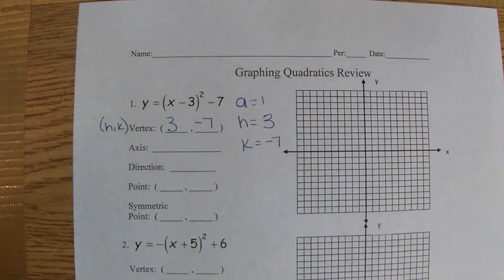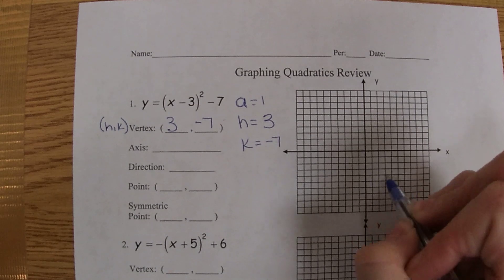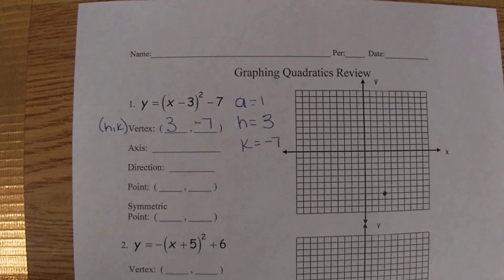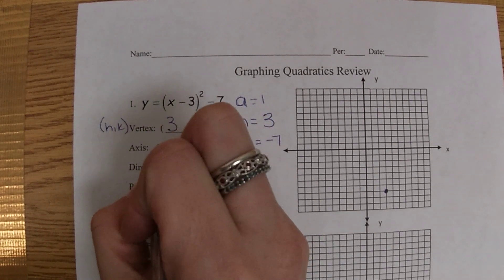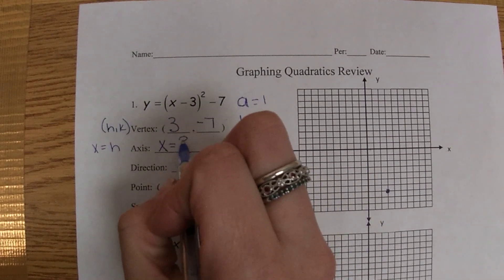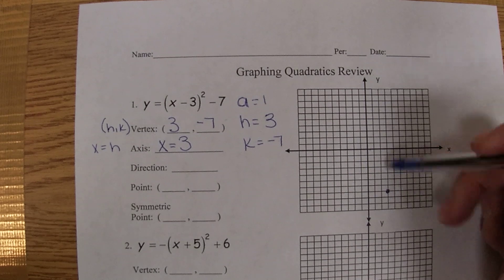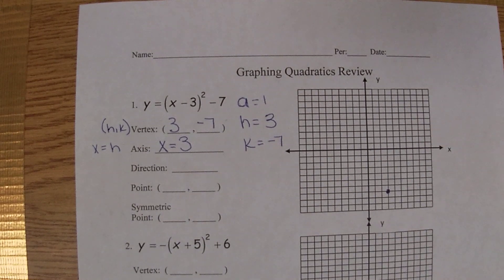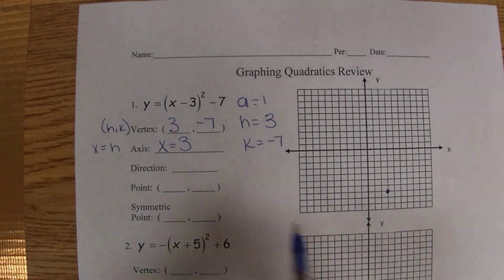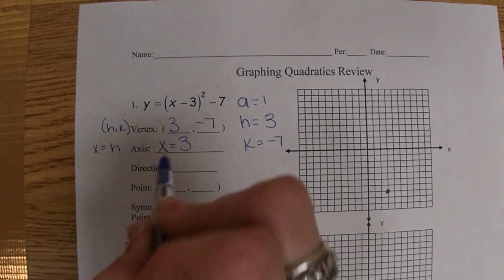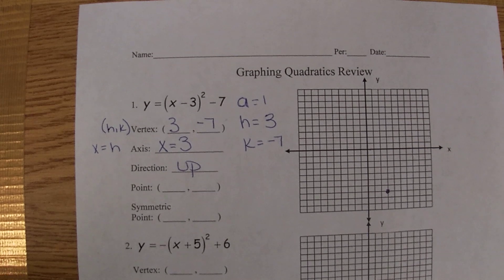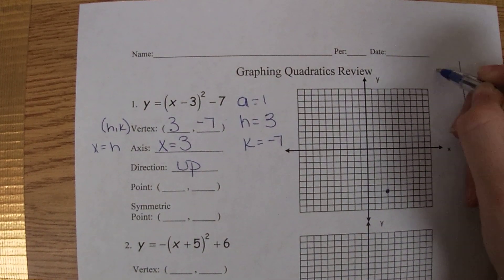Our vertex is always made up of h comma k, so that's going to be three comma negative seven. We can plot the point positive three negative seven - that's our vertex, that's the middle of our parabola. Our axis, our line of symmetry, is always x equals whatever number h is, so x equals three. We don't need to draw it in, but that's that vertical line happening right here. Our direction can always be determined by a. Because a is positive one, that tells us the parabola is going to go up.